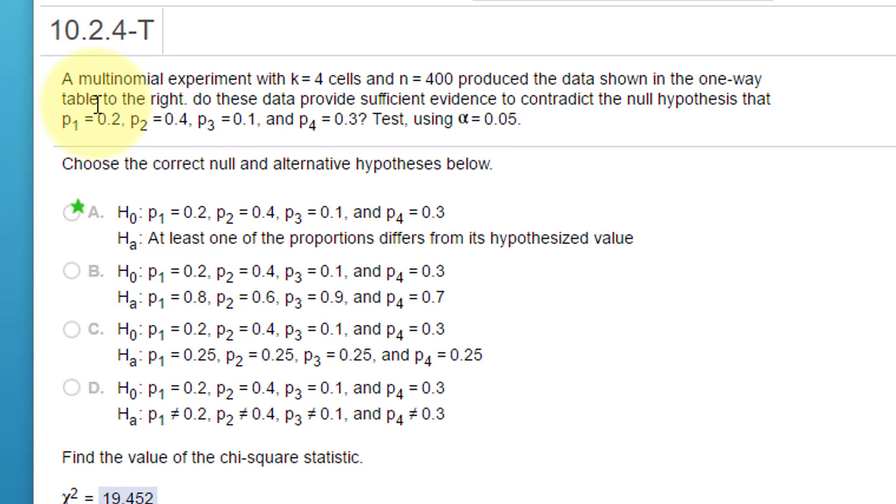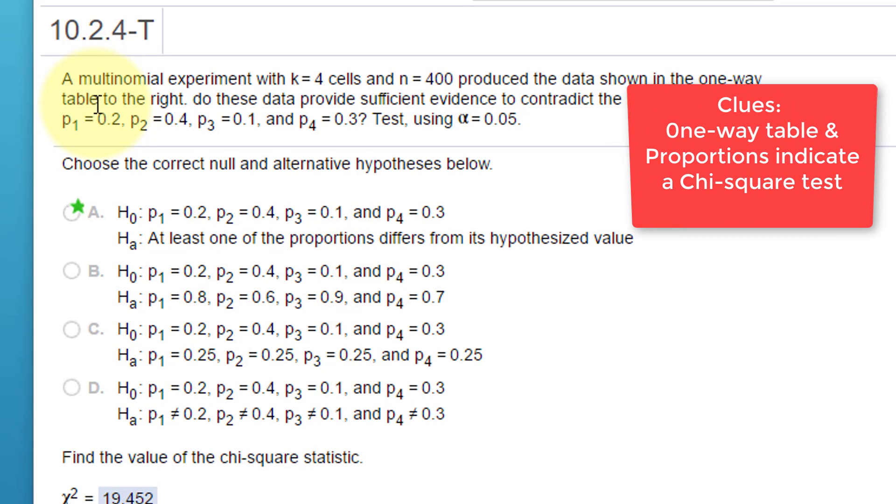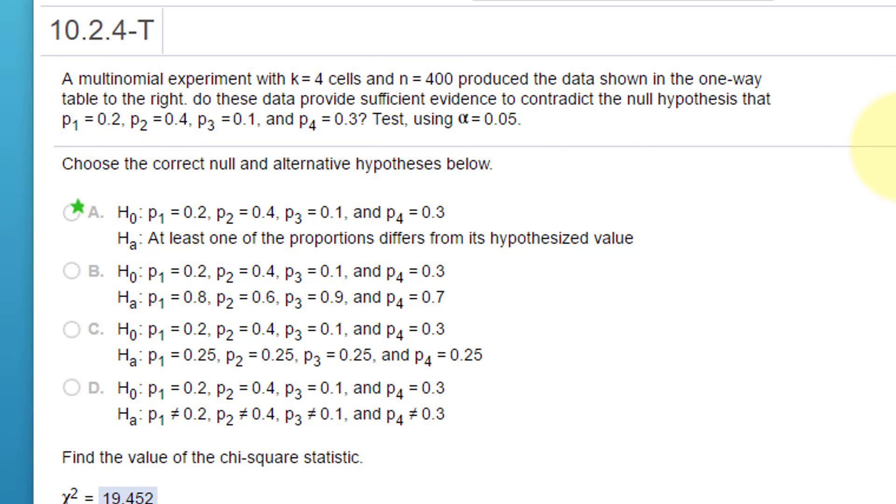In this one we're given a question that says a multinomial experiment with k=4 cells and n=400 produced the data over here in this table.